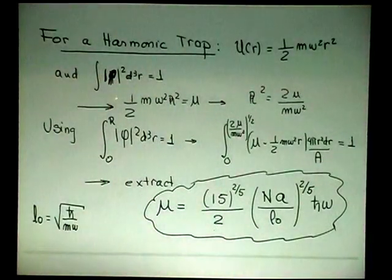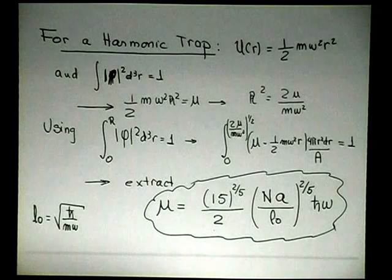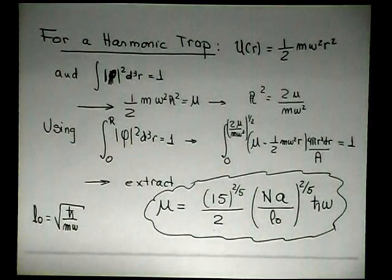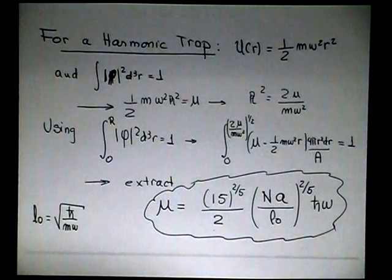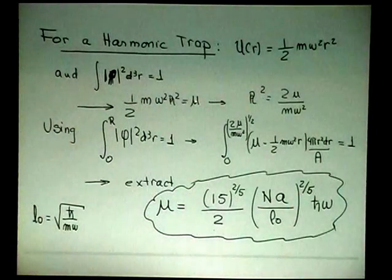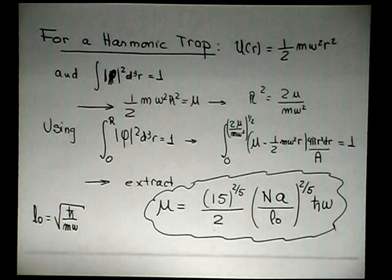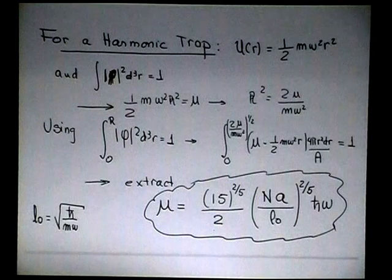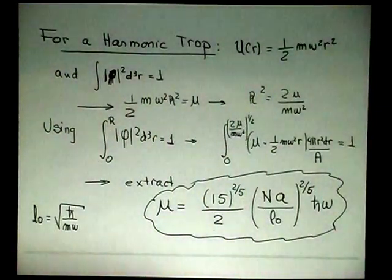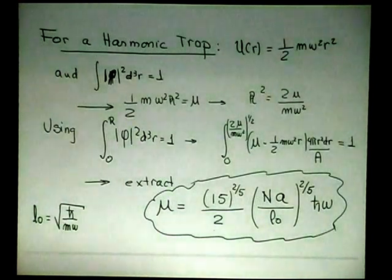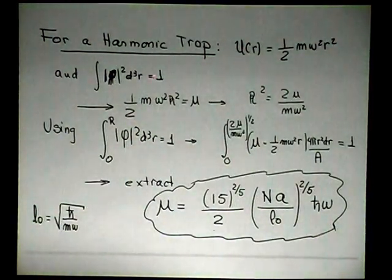If you have a harmonic potential, then u is half of m omega squared r squared. And of course, the integral has to be one, right? This is a wave function per particle, for one particle. It would be n if it is the total. Then where is this space that I have to integrate? I just make the potential equal to mu, then I get that the volume that's occupied by the particle is given by this radius. So my integral doesn't need to go from zero to infinite. Goes to zero to r, because outside r, the wave function goes to zero anyway.